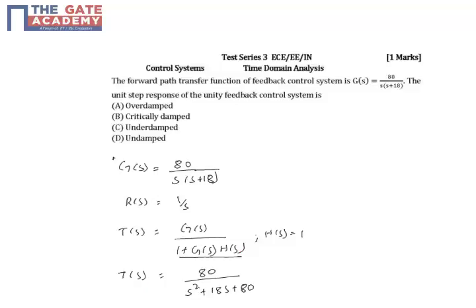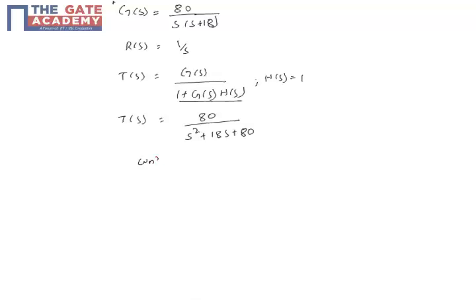Now we have to find the damping factor here. So for that, first omega n squared is equal to 80, which means omega equal to root of 80 radians per second. This is determined from the standard second order format.